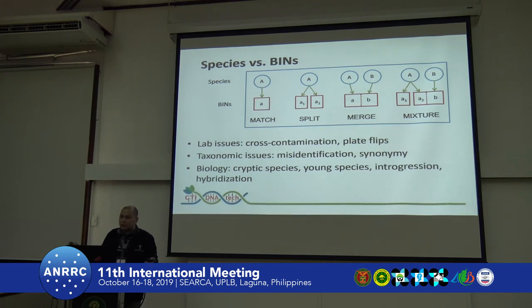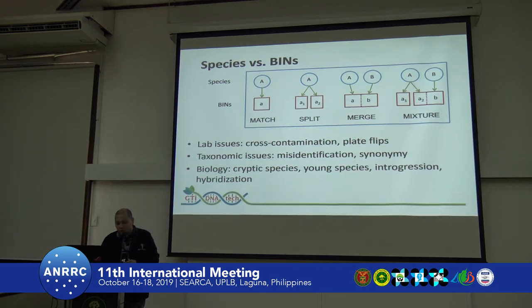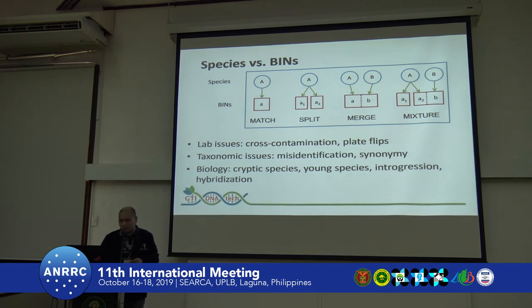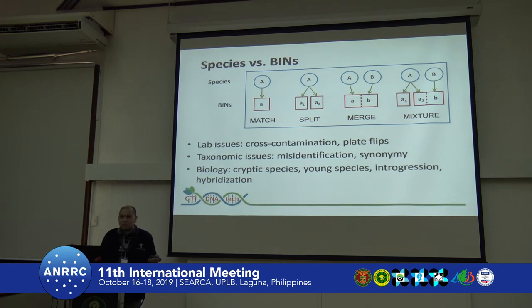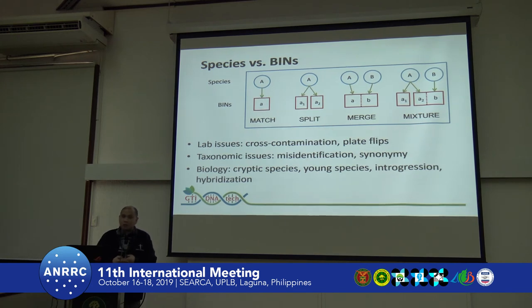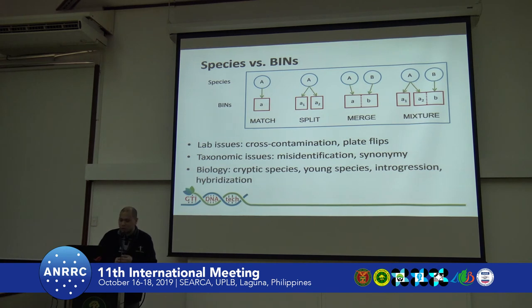The reasons for these incongruences could be lab issues such as cross-contamination or plate flips, taxonomic issues like misidentification and synonymy, or biological reasons such as the presence of cryptic species — species that resemble each other superficially but are in fact very different. Or it could be a result of young species that have not yet completely diverged, or introgression or even hybridization.